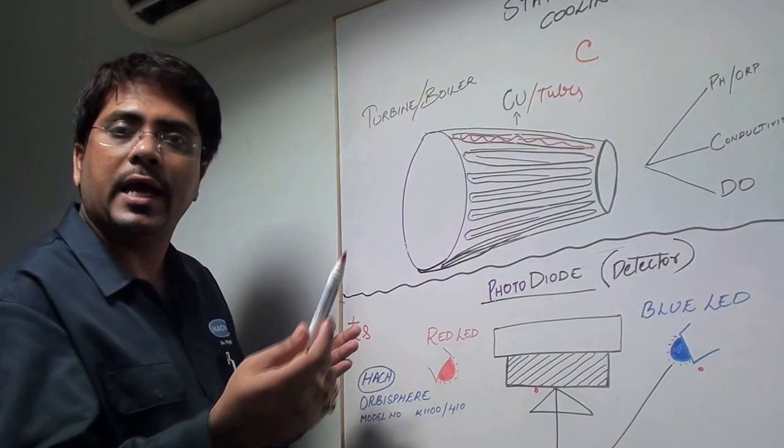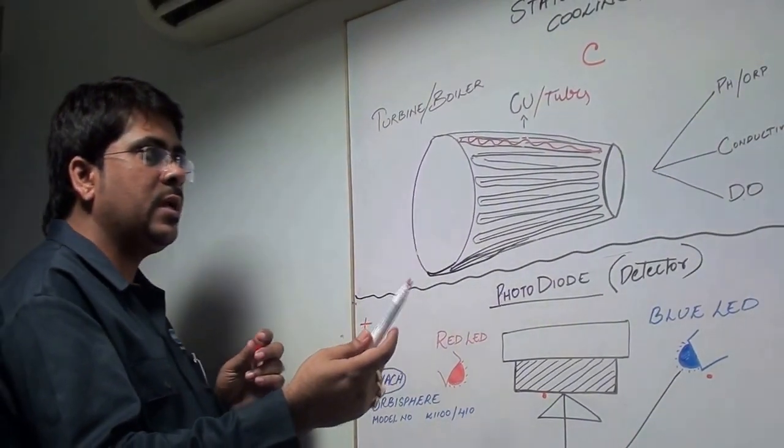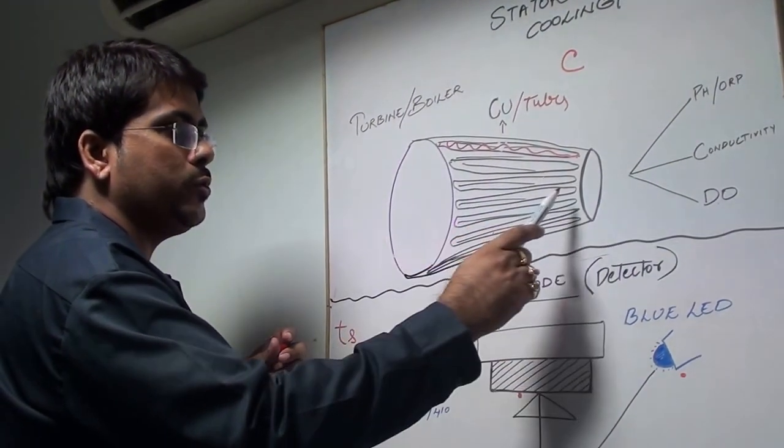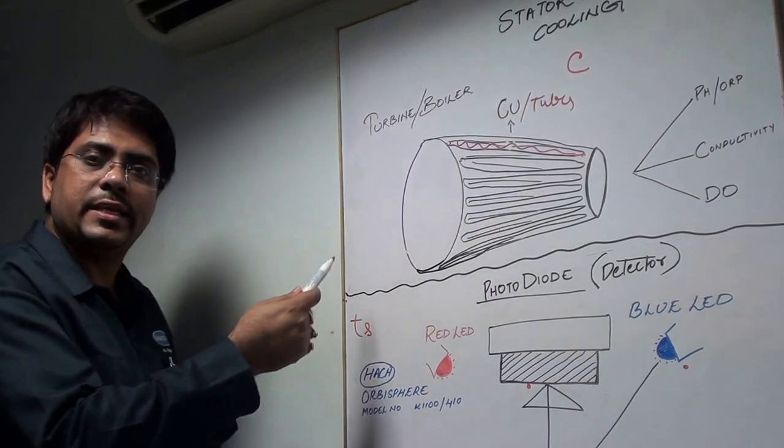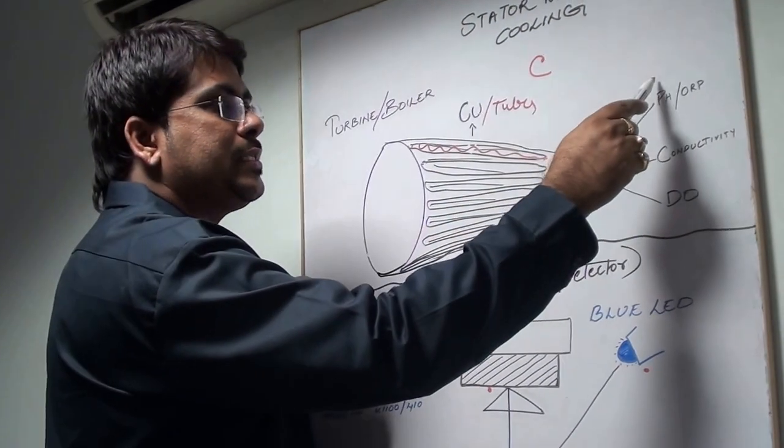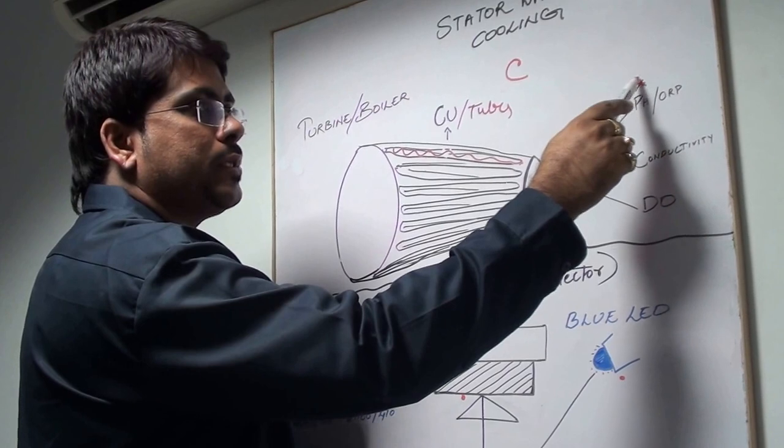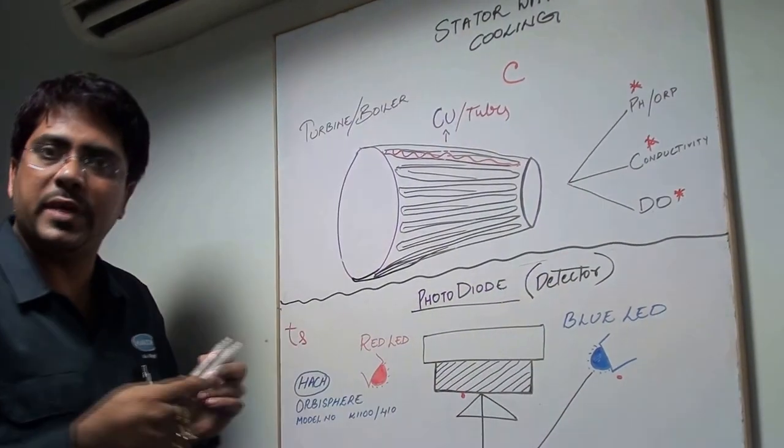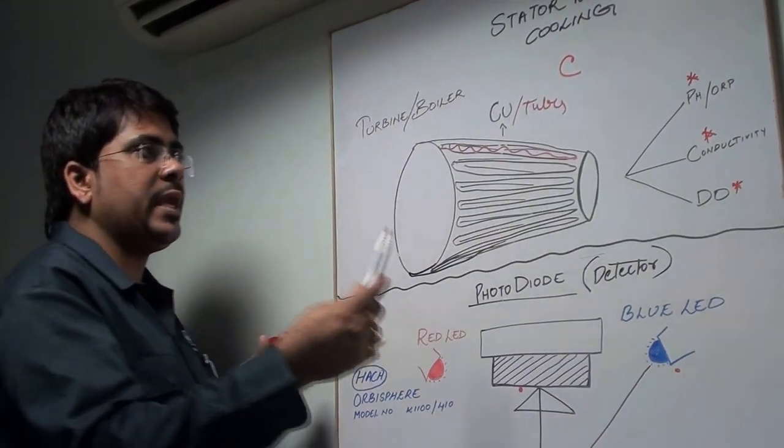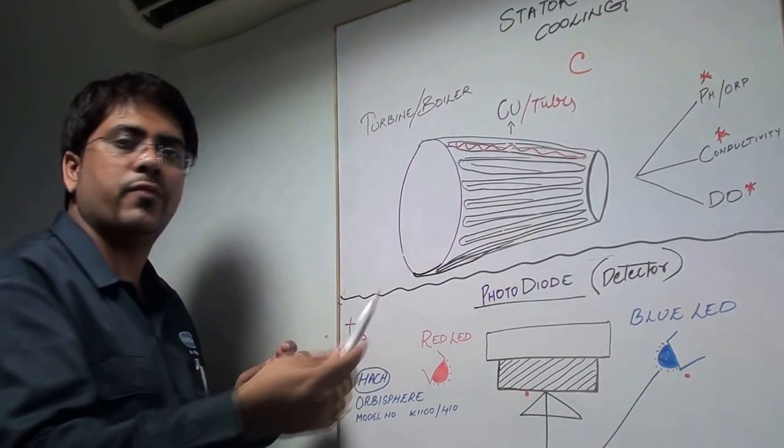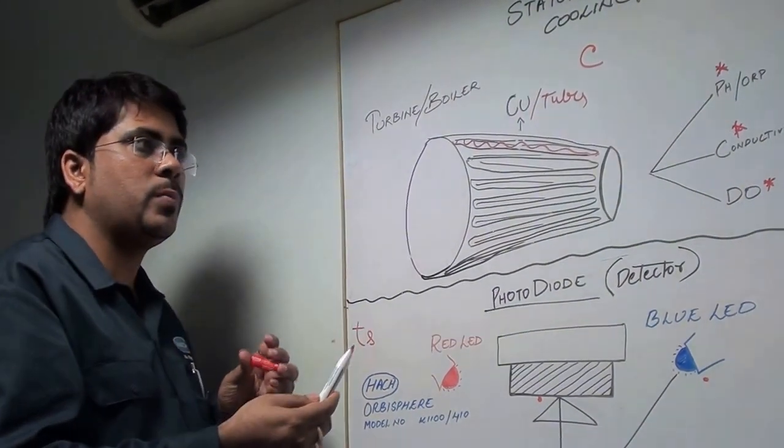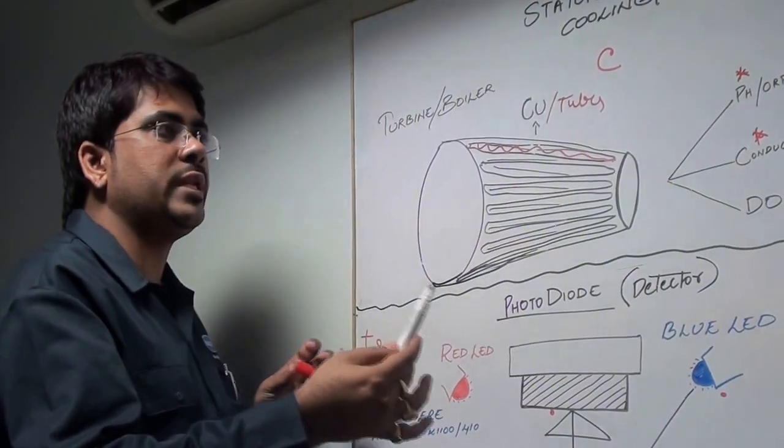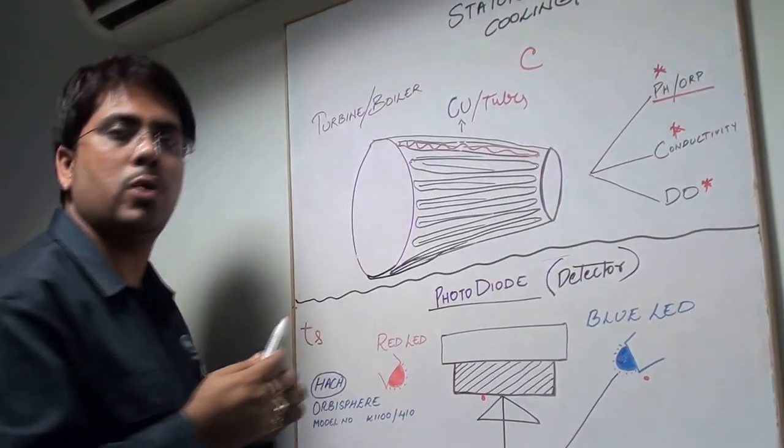When this ultra-pure water flows through these tubes, at the inlet we should definitely measure three particular parameters: pH/ORP, conductivity, and dissolved oxygen. pH and ORP are measured to detect whether the water going through this tube is becoming acidic or alkaline in nature.